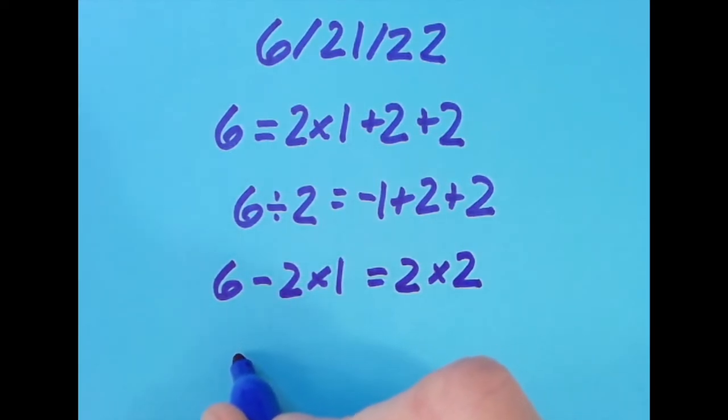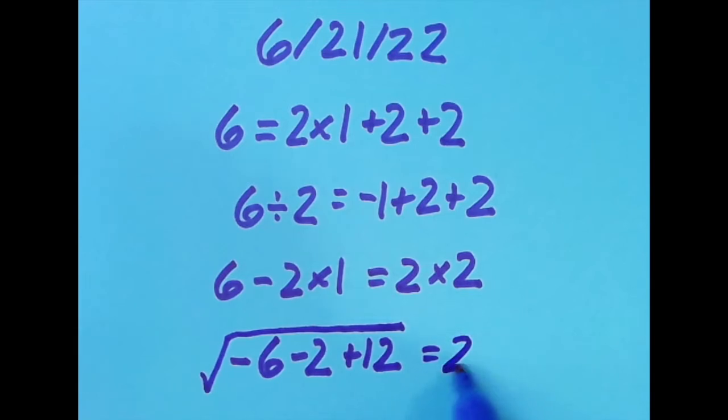And then lastly I want the equal sign at the end there. So what I said was negative 6 minus 2, so that gives us negative 8, plus 12. That's 4 and the square root of 4 gives us 2.